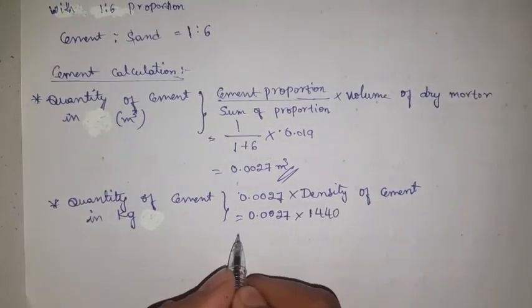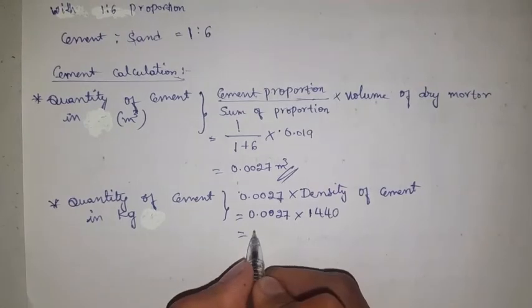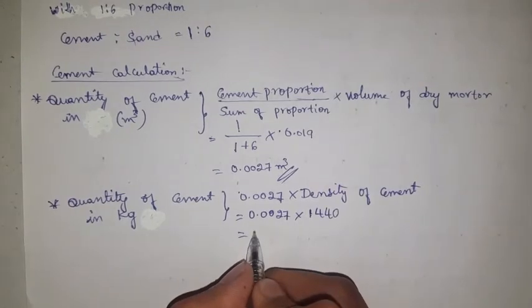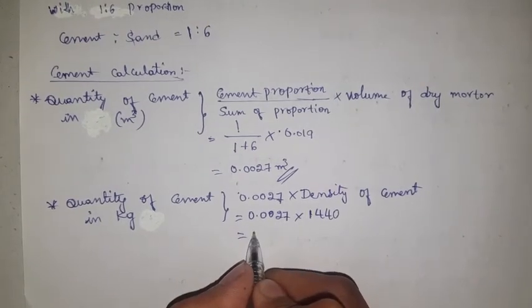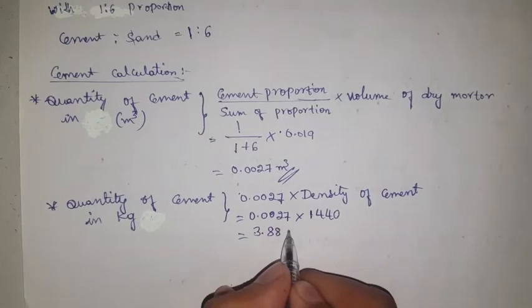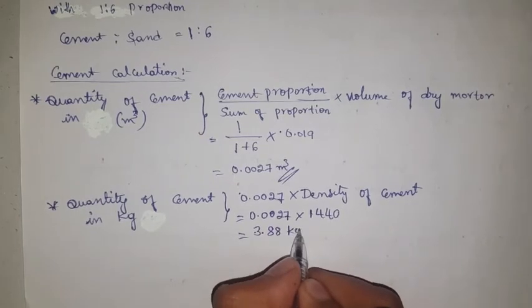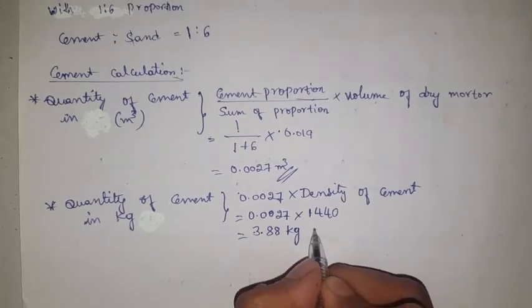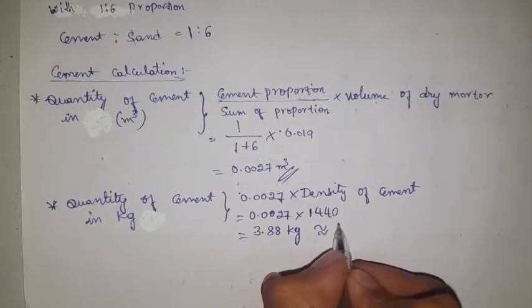Quantity of cement equals 0.0027 into 1440 = 3.88 kg, nearer to 4 kg. Friends, now the calculation of sand.